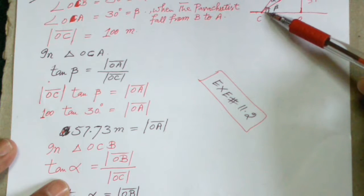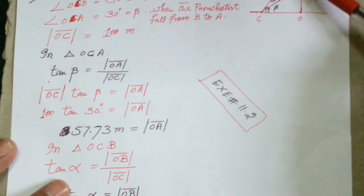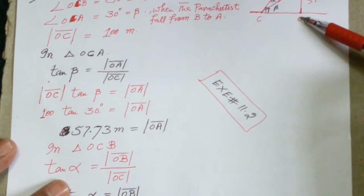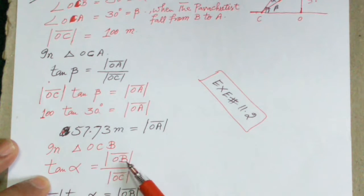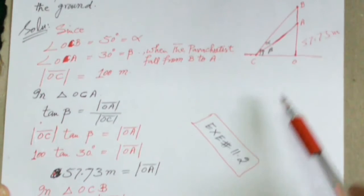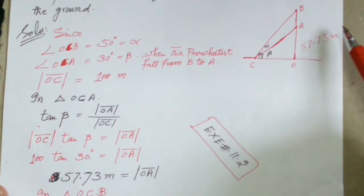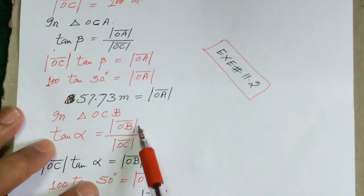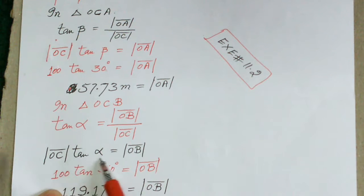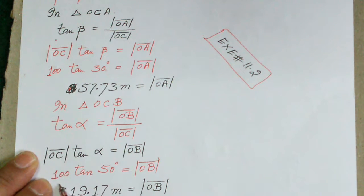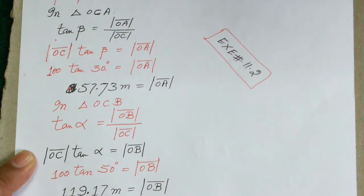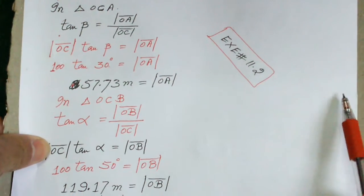Now in triangle OCB, OC with respect to angle alpha is the base, and OB is the perpendicular. So tangent of alpha equals OB divided by OC. OC is 100 meters, so 100 times tangent of 50 degrees equals OB. Simplifying, OB is equal to 119.17 meters.